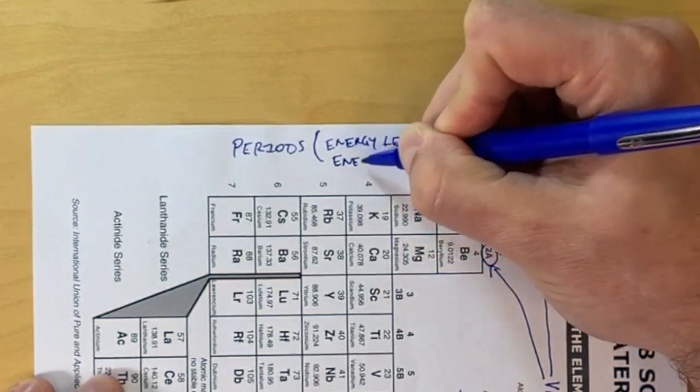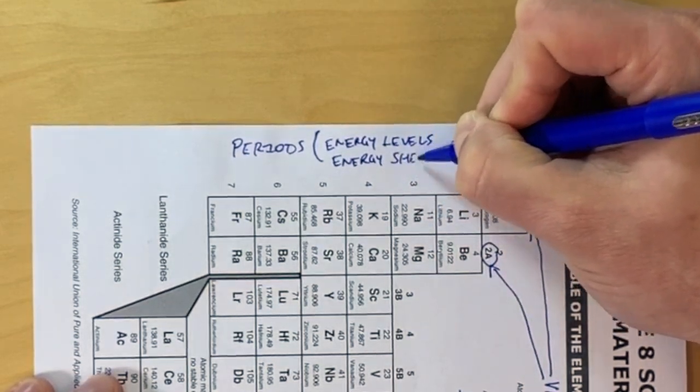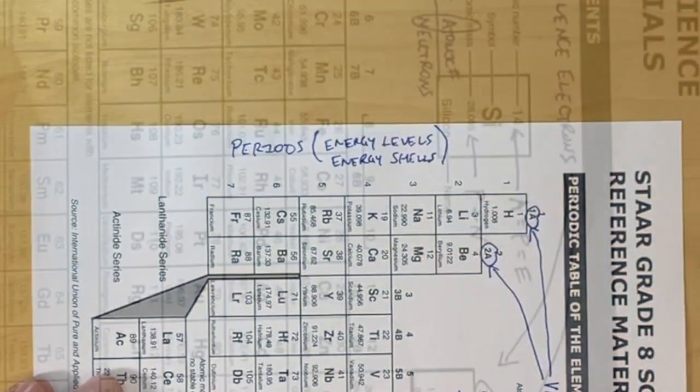For example, in period two, the element will have two energy levels. In period three, the element will have three energy levels.